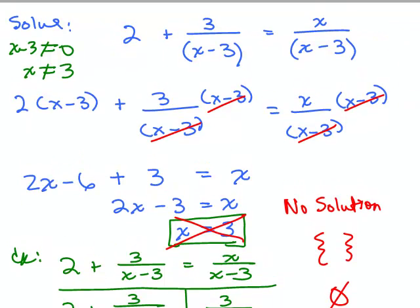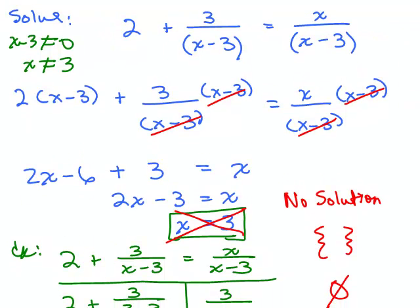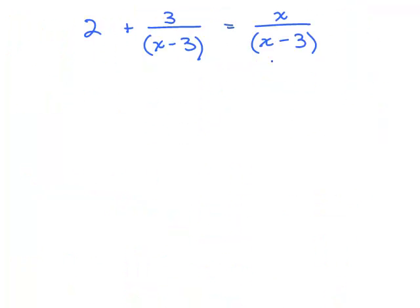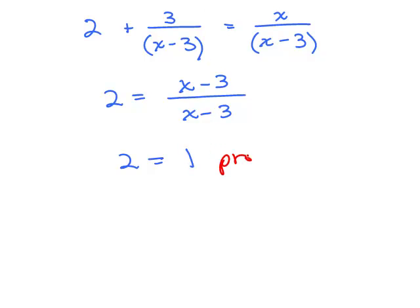Looking at this original problem another way: if I subtract 3 over (x minus 3) from both sides at the start, on the right-hand side I get (x minus 3) over (x minus 3), which cancels, leaving 2 equals 1 — an immediate contradiction. You can stop right there and say no solution. Sometimes doing this step first lets you see there's a problem right off the bat.